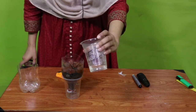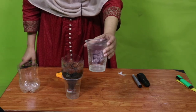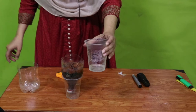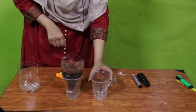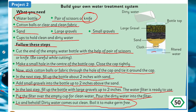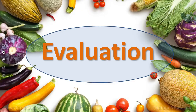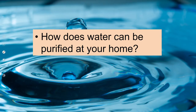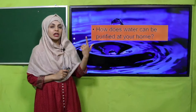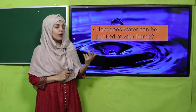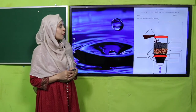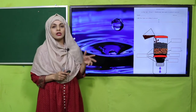The water is absolutely clean and you can boil it to make it germ-free. This process is called filtration. For evaluation: how can water be purified at home? By using filtration and boiling. For practice, you can download the worksheet from the description box below this video, or get it in print form from your teacher.